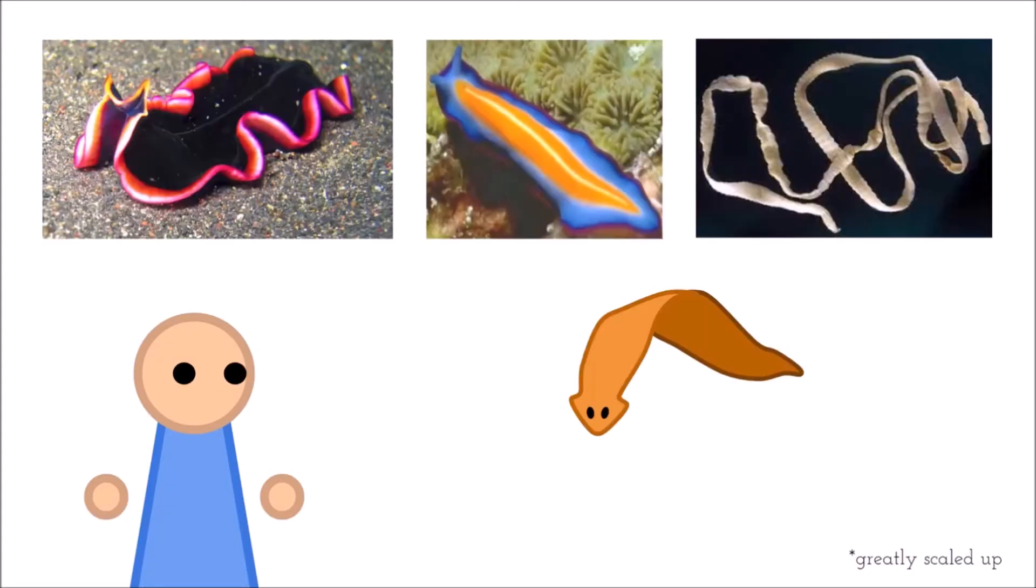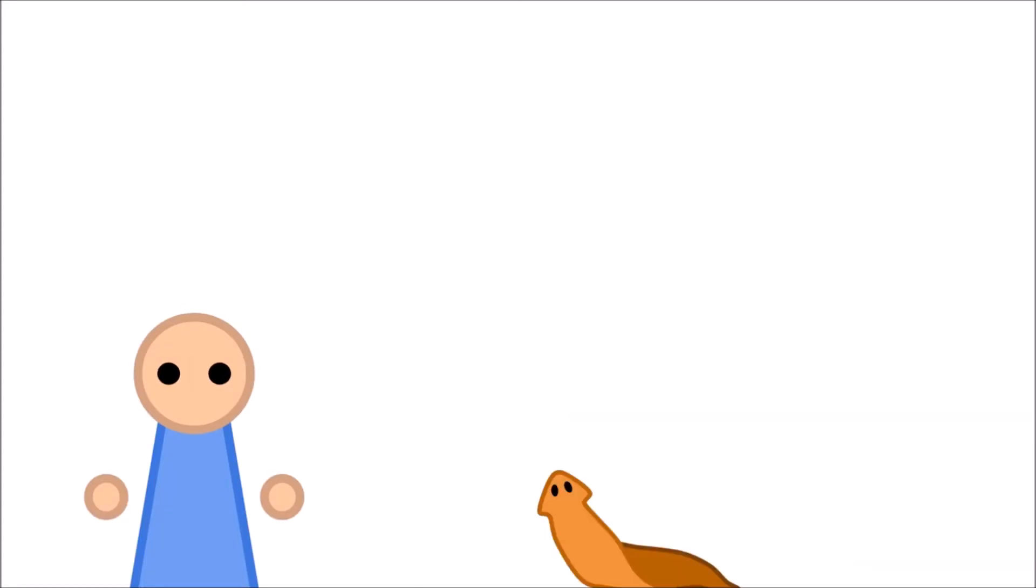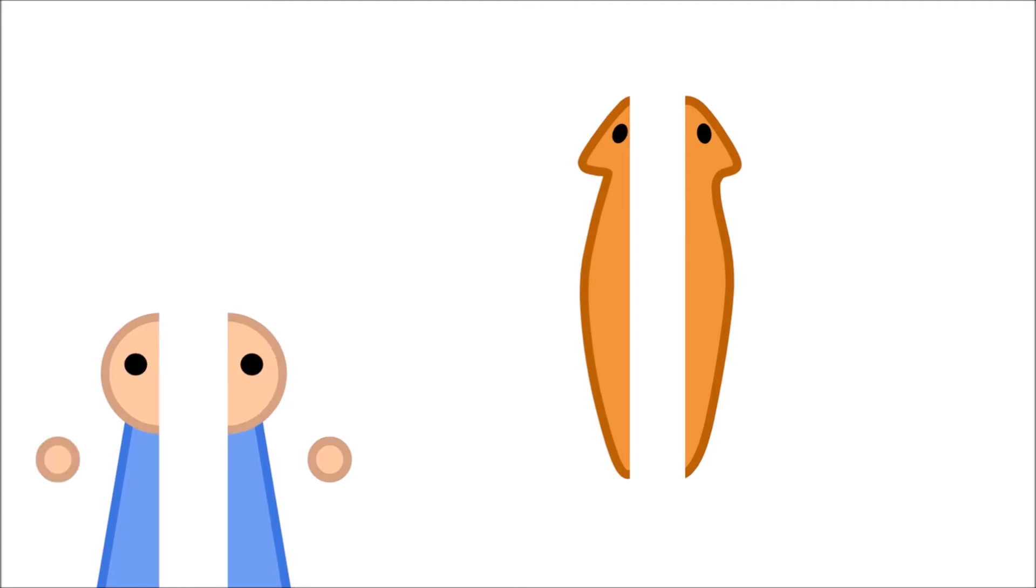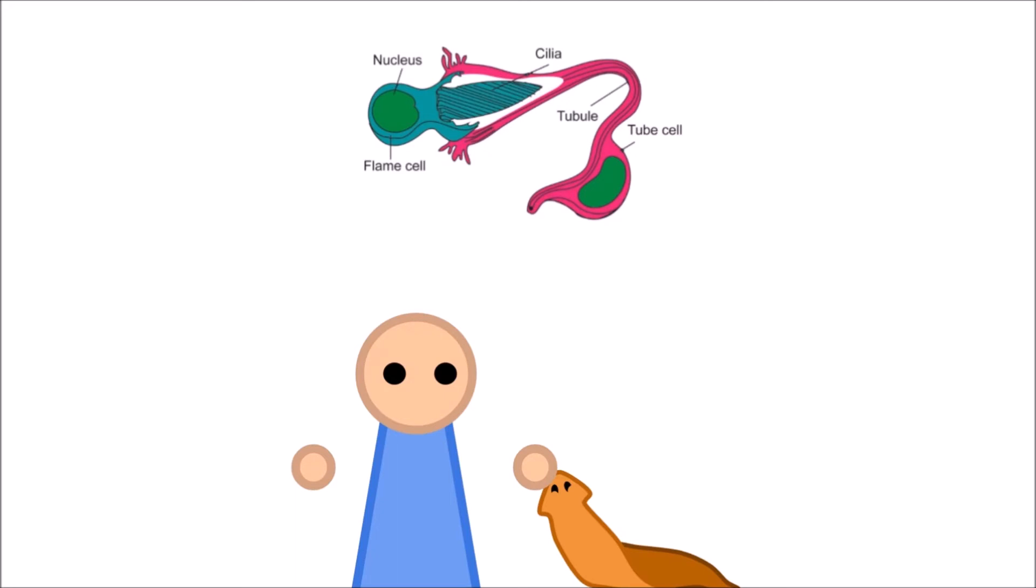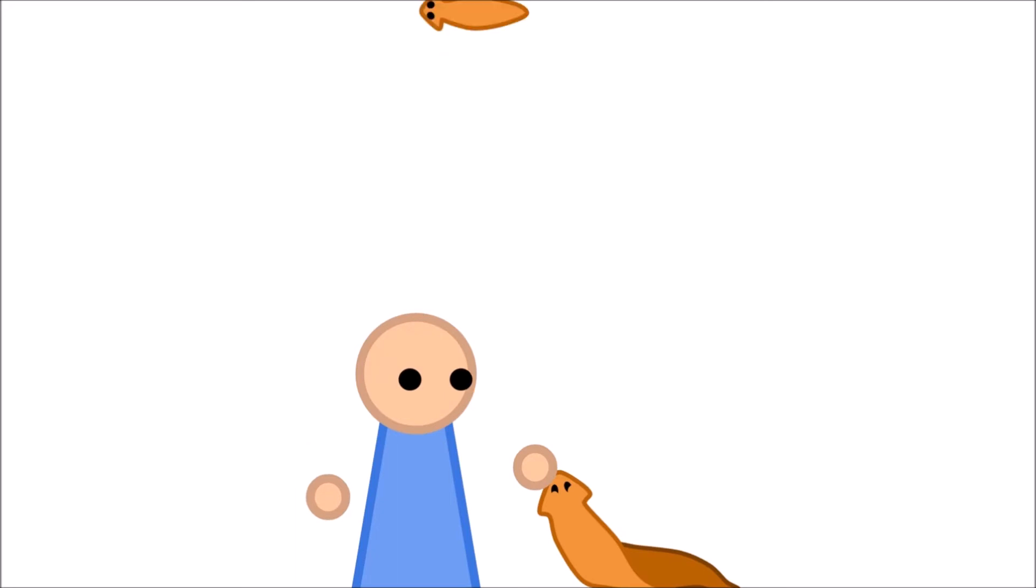Platyhelminthes, or flatworms, represent the last change in symmetry we'll see in this exploration. They are bilaterally symmetric, meaning they have mirrored left and right sides. Like us, we're getting closer. Their tissue level also advances to organ level, with our little buddies having rudimentary systems like flame cells, which make up an early excretory system, or dual gland adhesive organs, which allow some platyhelminthes to attach and detach from surfaces. But this is not enough to say they are on the organ system level.